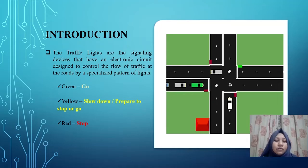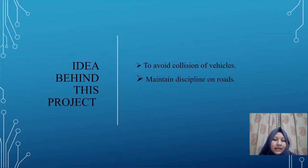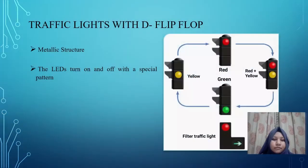There are three lights: green for go, yellow for slow down, and red for stop. Now I will talk about the idea behind this project. The idea is to avoid pollution from vehicles, maintain discipline on the road, and support digital systems.